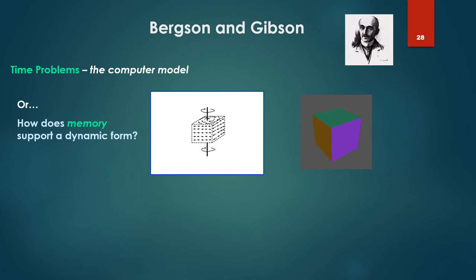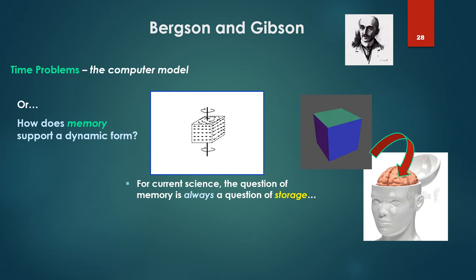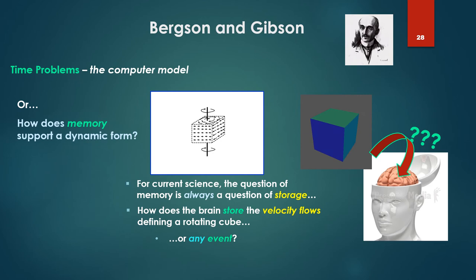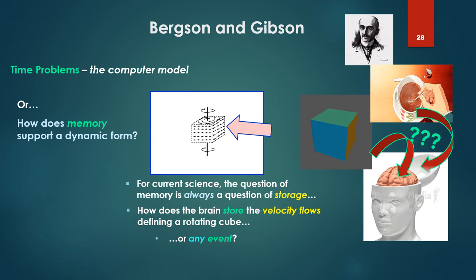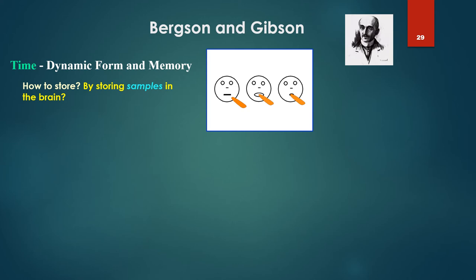Or putting it differently, how does memory support dynamic form? For current science, the question of memory is always a question of storage. How do we store that rotating cube as an event in the brain? Because that's what's supposed to happen. How does the brain store the velocity flows defining a rotating cube? Or any event? Or coffee stirring, for example. Same problem - the velocity flow fields, tons of motion. How to store? By storing samples in the brain? This was Barsalou's example solution. Take a biting transformation, like the face there biting a carrot. We'd store that as three schematic image-like states shown above. So biting a carrot in the brain goes these three schematic states.